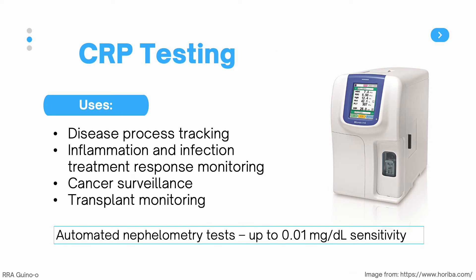In the clinical laboratory, CRP testing is used for disease process tracking — CRP levels increase as disease is ongoing and decrease as it resolves. It is also used for inflammation and infection treatment response monitoring, cancer surveillance where an increase may indicate recurrence or metastasis, and transplant monitoring where an increase may indicate rejection. For these uses, we use automated nephelometry tests, which are sensitive up to 0.01 mg per deciliter.